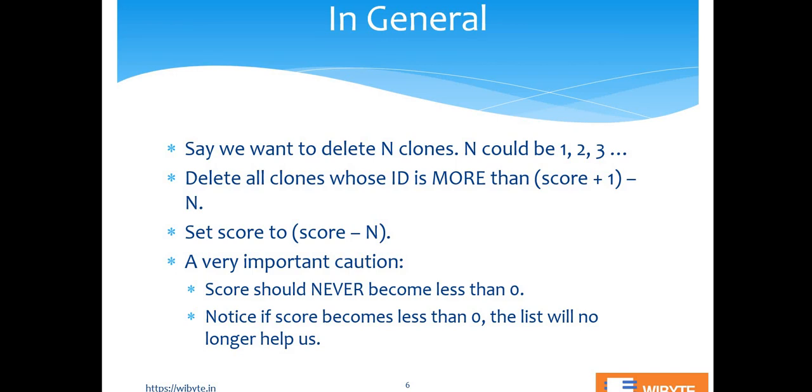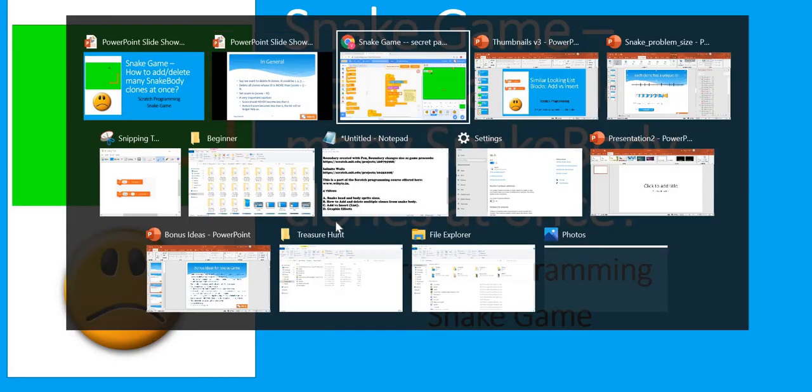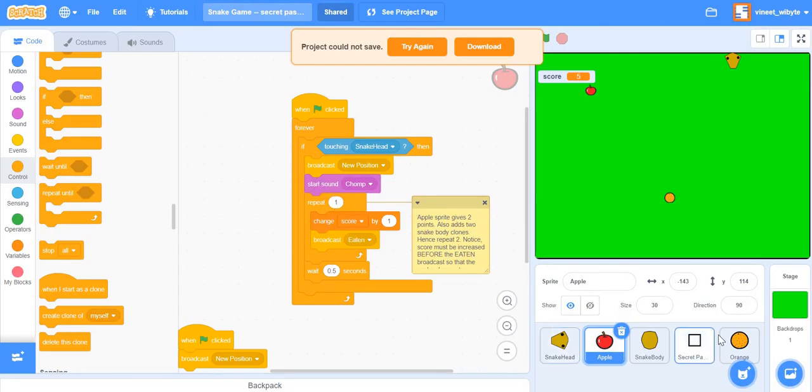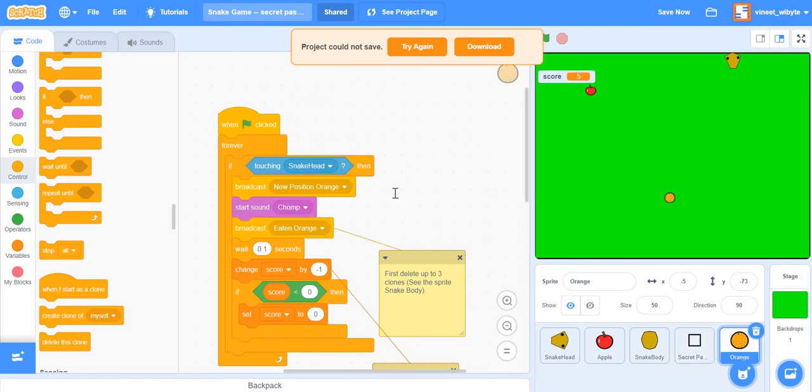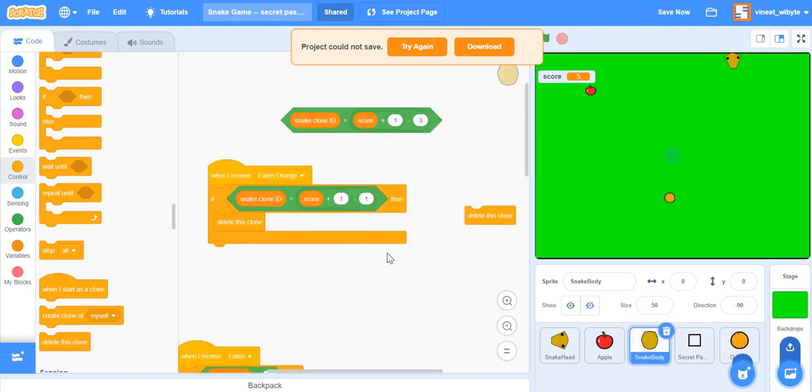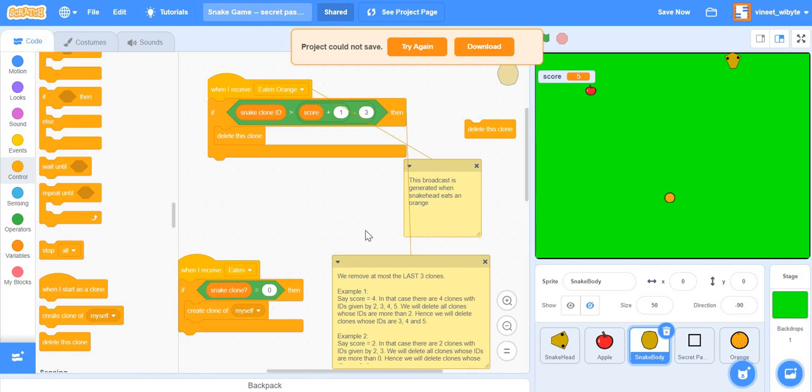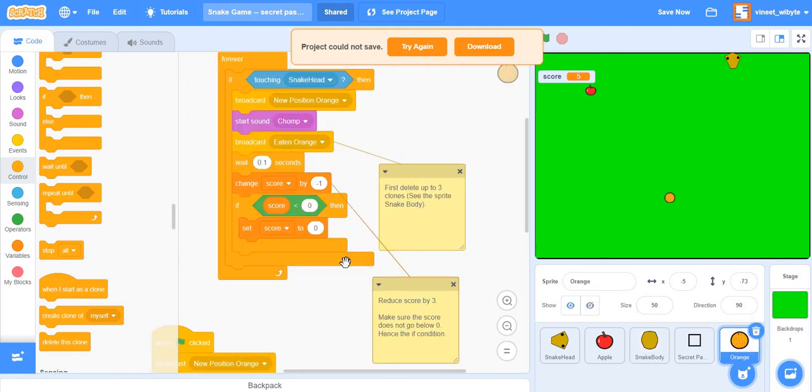Now, if you're getting confused with this formula, just put values for N. So, for example, if N is equal to one, which we just saw, it deleted one clone. Now, let's say I go back to my game and I refix this to give me a deletion of three clones. So, what do I have to do? I'll go and check. In the snake body clone, I'll go and say if snake clone ID is score plus one minus three. Again, I've given some comments here to explain this, the same logic. But all I have to do is say minus three. I'll delete that clone. Also, when I do this, I must set the score back to minus three. So, now my Apple will give me one point, but orange will take away three points.